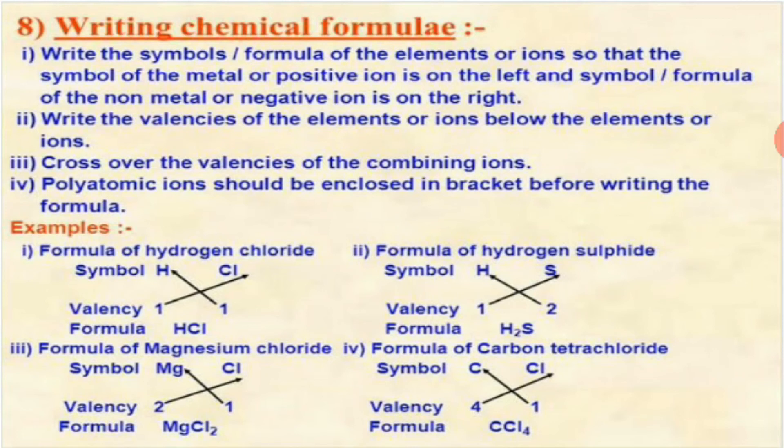For hydrogen sulfide H₂S: hydrogen has valency 1 and sulfur has valency 2; cross multiplying gives H₂S. For magnesium chloride: Mg has valency 2 and Cl has valency 1; cross multiplying gives MgCl₂. For carbon tetrachloride CCl₄: carbon has valency 4 and chlorine has valency 1; cross multiplying gives CCl₄. We do not place Cl in a bracket because chlorine is not a polyatomic ion.